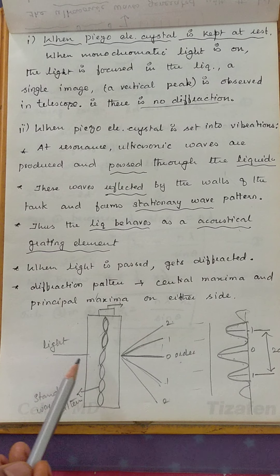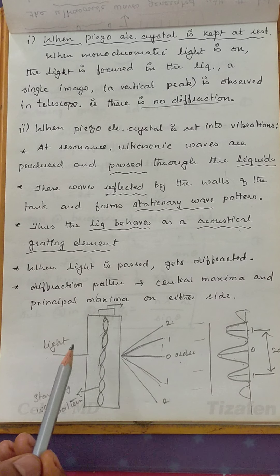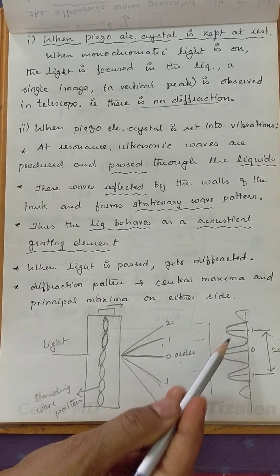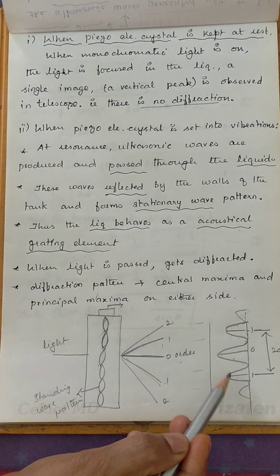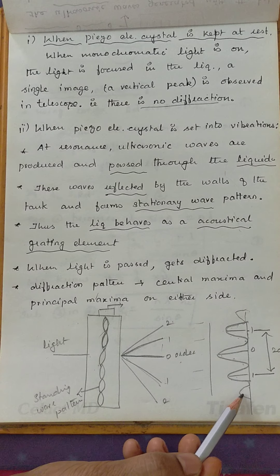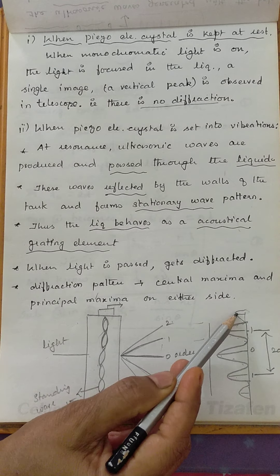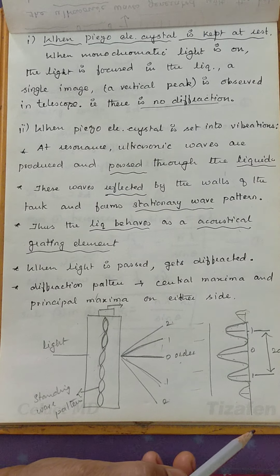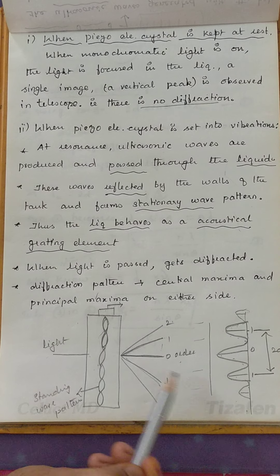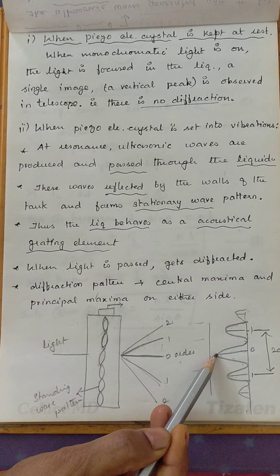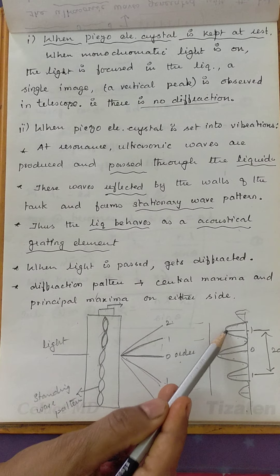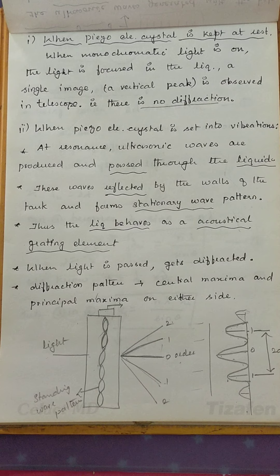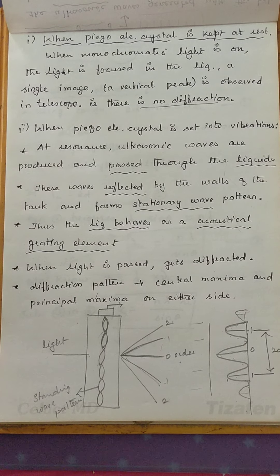At that time, when light is forced through this acoustic grating, it gets diffracted. The diffraction pattern consists of a central bright maxima. On either side of it, we get bright lines with less intensity. Then another two lines with still less intensity appear beyond those. As the order increases, the intensity gets reduced. So the central bright maxima has the highest intensity, followed by first order lines, then second order lines.